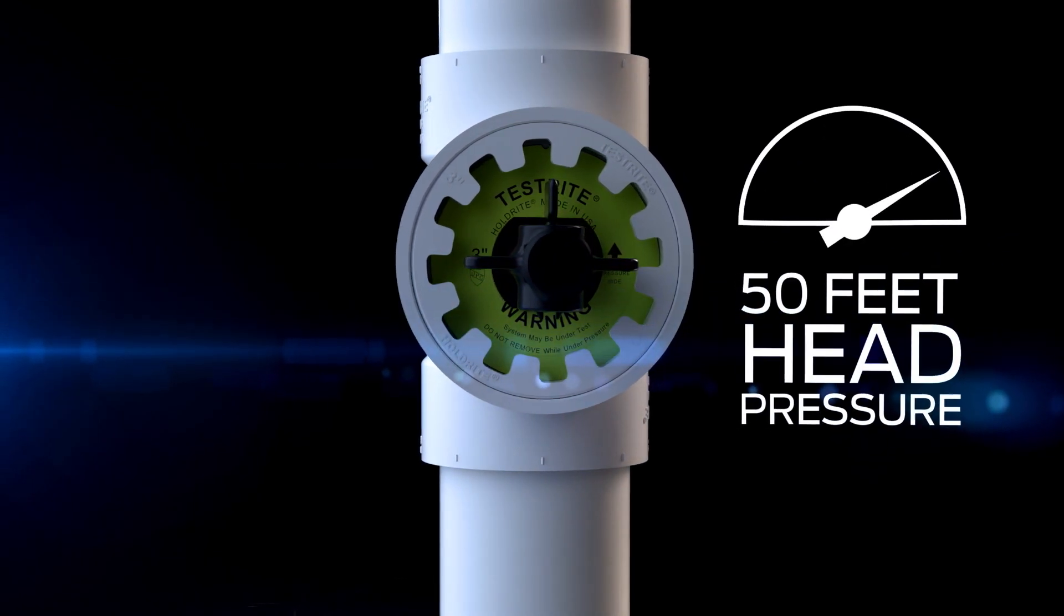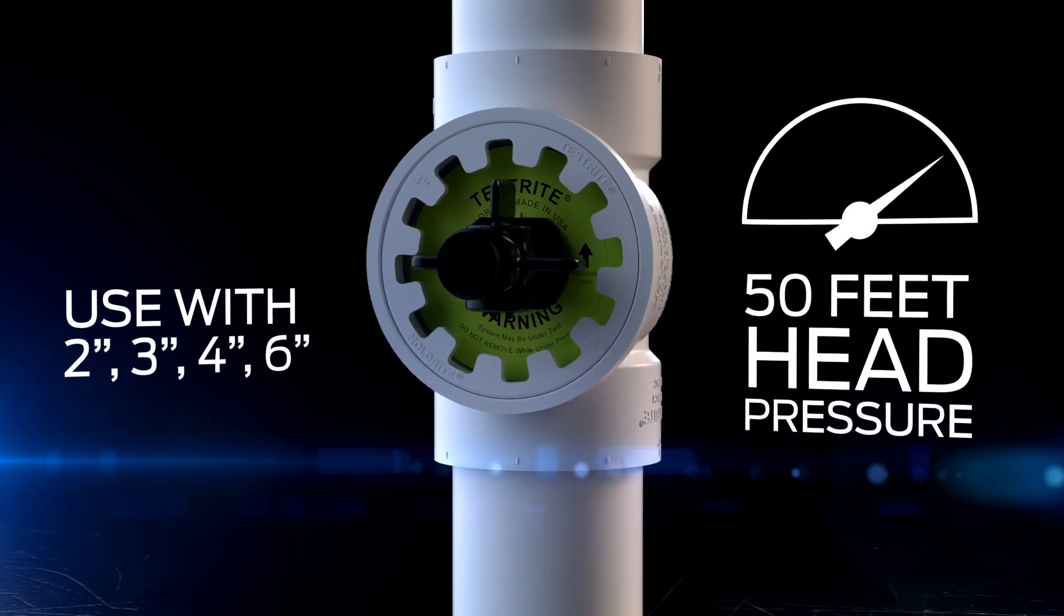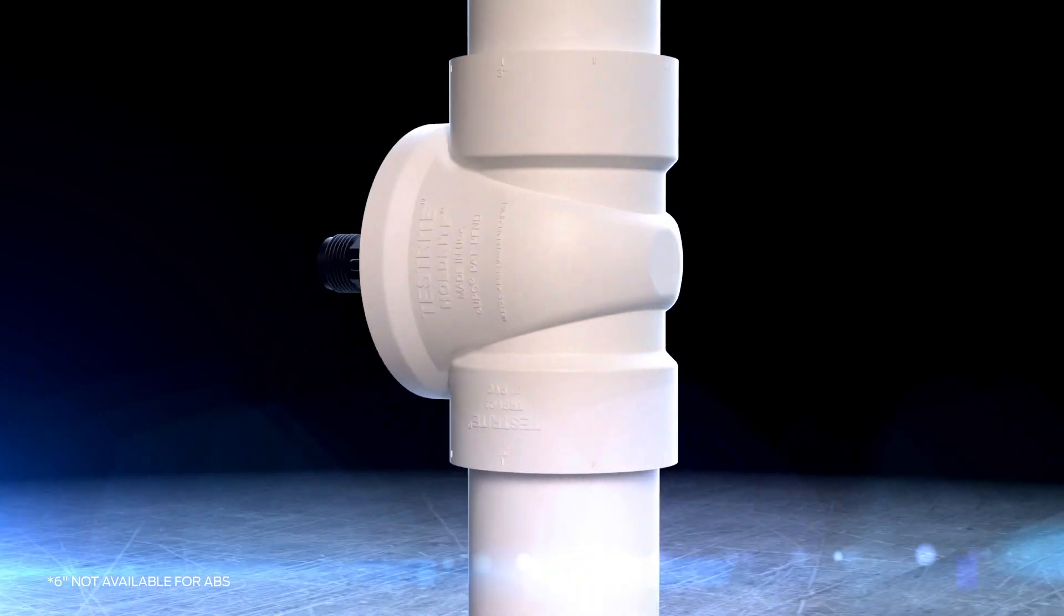TestRite is rated for up to 50 feet of head pressure and is available for use with 2, 3, 4, and 6 inch PVC, ABS, or cast-iron piping systems.